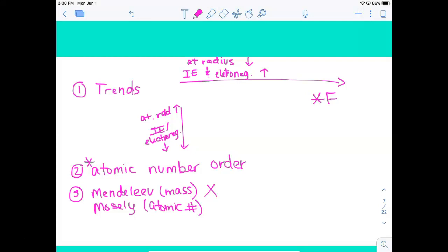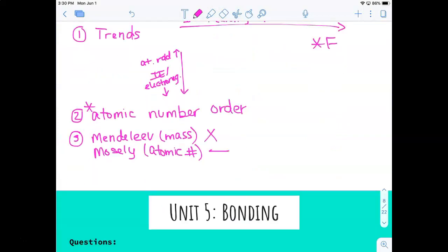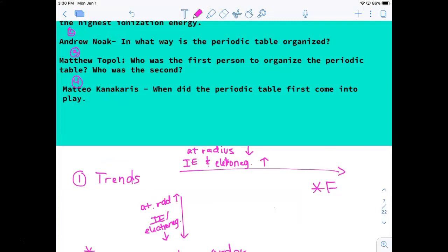So Moseley's order changed a few of the elements that don't go in mass order. This name you really don't need to know. If they're asking about how it's organized today, they're usually just going to say the word modern. That means how is it organized today.